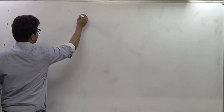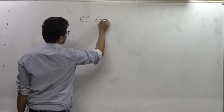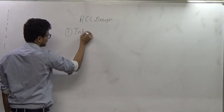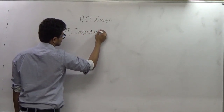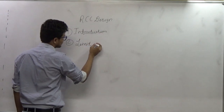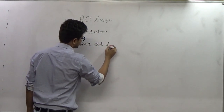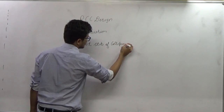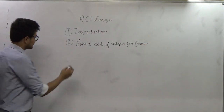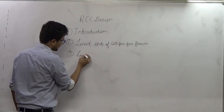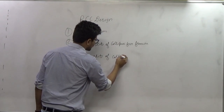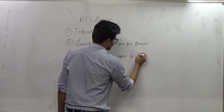So far in RCS design, we have covered the introduction part and a limited set of collapse lecture, so these two topics we have already covered. Today we will start our discussion of limited set of collapse for shear.